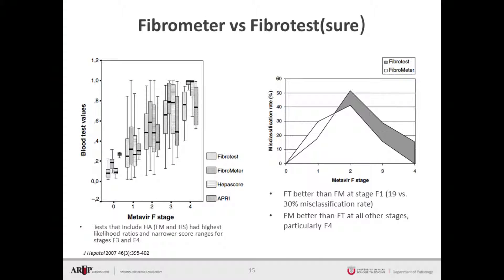Another independent study evaluated four particular tests used to assess liver fibrosis. At F2, the tests were comparable. However, FibroMeter and the HEPA score had the highest likelihood ratios and narrower score ranges for stages F3 and F4. In the graph on the right, Metavir stage is on the x-axis and rate of misclassification compared to biopsy on the y-axis. The highest rate of misclassification occurred at F2 for both FibroMeter and FibroTest. However, FibroMeter was better than FibroTest or FibroSure at all stages, and was slightly less accurate only at F1.